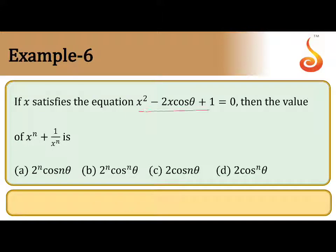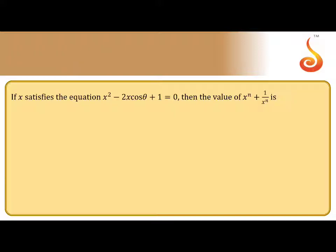The equation x squared minus 2x·cosθ plus 1 equals 0. Given that x satisfies this equation, find the value of x^n plus 1 by x^n.